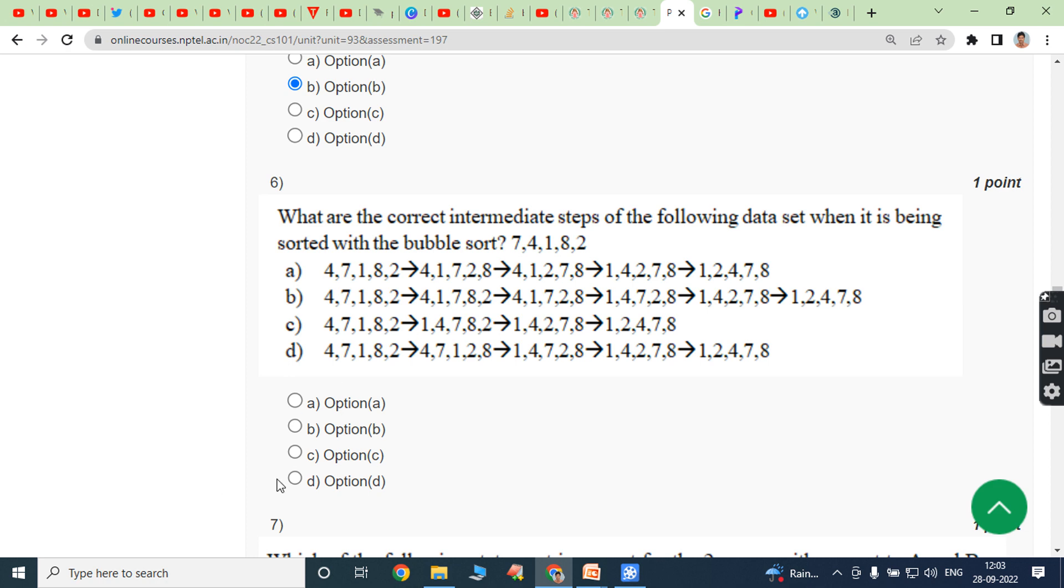In the bubble sort, adjacent elements are compared. First, 7 is compared with the 4. They are not in sorted order, so that we have to put them in sorted order. So that is 4, 7. Next one, 7 and 1 are compared. They are not in sorted order, so after putting them in sorted order we are getting 1, 8, then 2. So this procedure is applied until all the elements of the array can be sorted. So answer is option B.